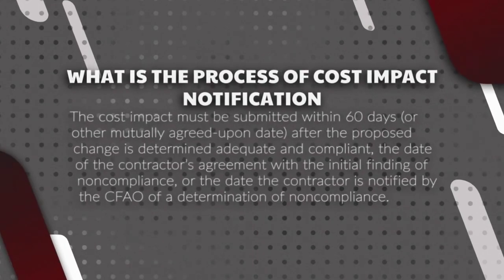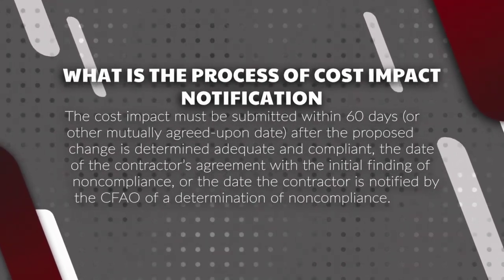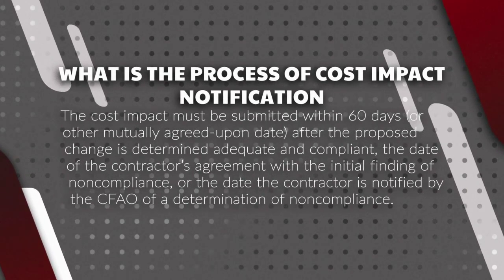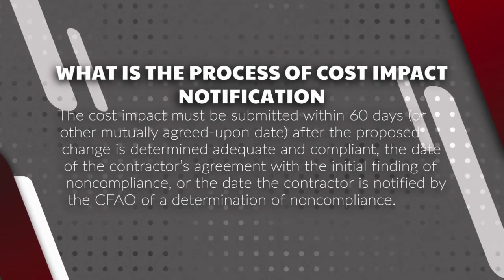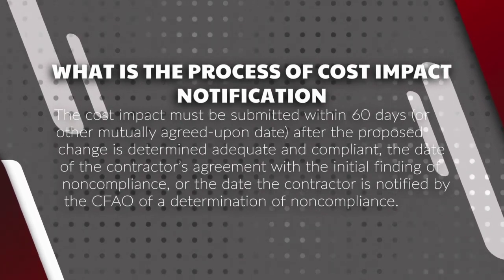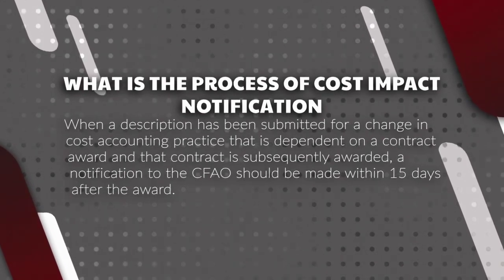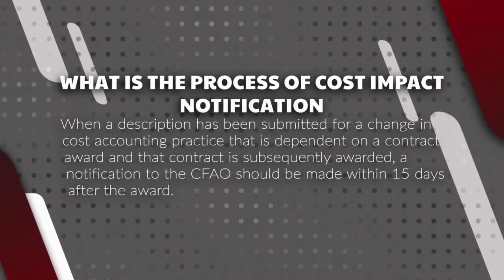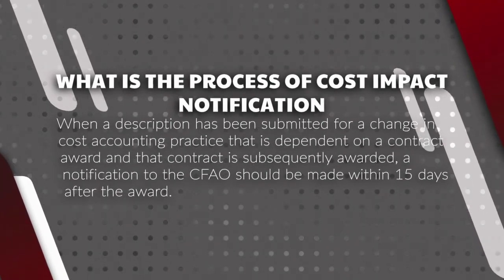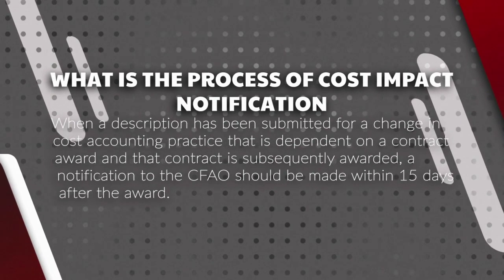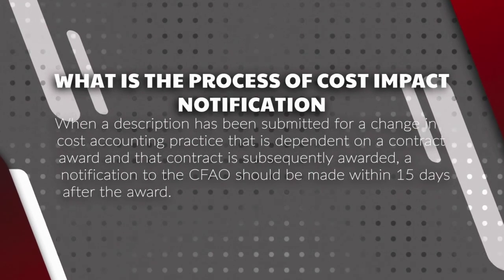The cost impact must be submitted within 60 days, or other mutually agreed upon date, after the proposed change is determined adequate and compliant, the date of the contractor's agreement with an initial finding of noncompliance, or the date the contractor is notified by the CFAO of a determination of noncompliance. When a description has been submitted for a change in cost accounting practice that is dependent on contract award and that contract is subsequently awarded, a notification to the CFAO should be made within 15 days after that award.